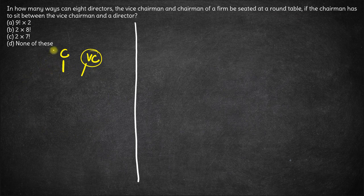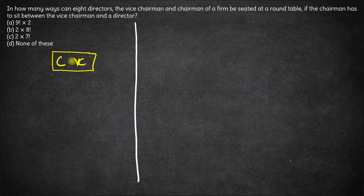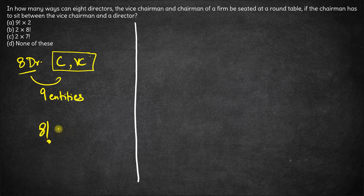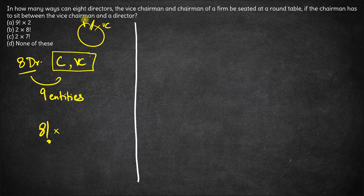So what we can do is make a group of the chairman and the vice chairman. We then have 8 directors plus this group — effectively 9 entities to be seated around a circle. The number of ways of seating these 9 people around a circle is 8 factorial. In all these 8 factorial arrangements, wherever the chairman is, the vice chairman will be next to him and the other person next to the chairman will definitely be a director.